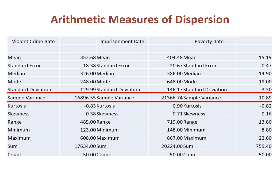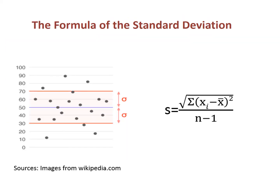The measures of dispersion for arithmetic measures are the standard deviation and variance, the latter referred to as the sample variance in this output. The standard deviation is how far the typical point is from the mean. This distance between a point and the mean is sometimes called the error, which makes the standard deviation the average error around the mean. The variance is the square of the standard deviation. Many complex statistics are built on n, the mean, and the standard deviation, so we need to understand the standard deviation in detail.